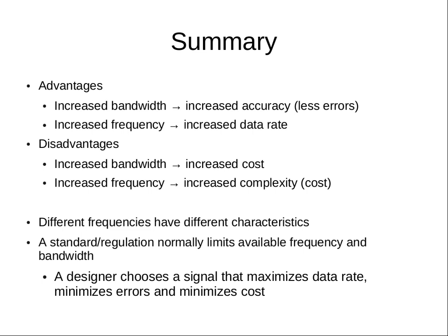Someone who designs a communications system needs to consider maximizing the data rate, minimizing the errors, and minimizing the cost. That's why it's not easy to select the best signal. The main thing to take away is the different trade-offs when designing communication signals, and the mathematics of sine waves and how we can combine them to get different properties. We will see a more general relationship between bandwidth and data rate in the next lecture, with equations that relate them together.